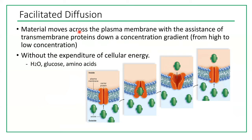Material moves across the plasma membrane with the assistance of transmembrane proteins, down a concentration gradient from high to low concentration, without the expenditure of cellular energy — ATP is not used. Examples include water, which moves through special proteins called aquaporins; glucose, which moves through glucose transport proteins; and amino acids, which also move through proteins.